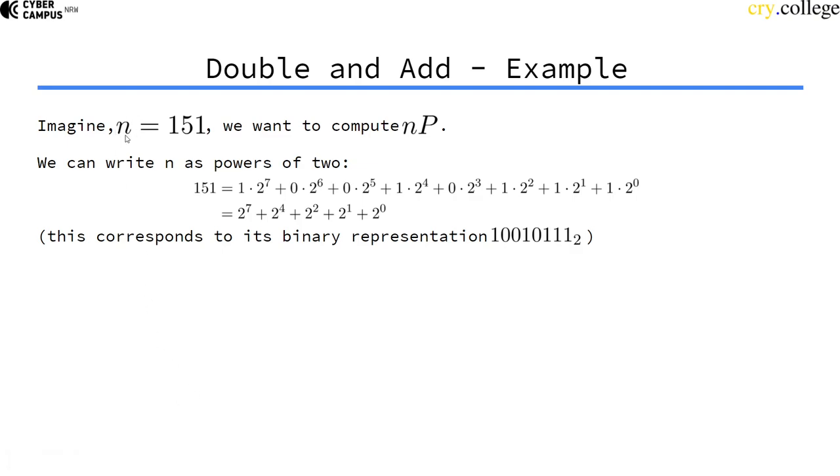Imagine we have n equals 151 and we want to compute a scalar multiplication nP. What we can do is write n as powers of 2. This is nothing else than writing n as its binary representation.